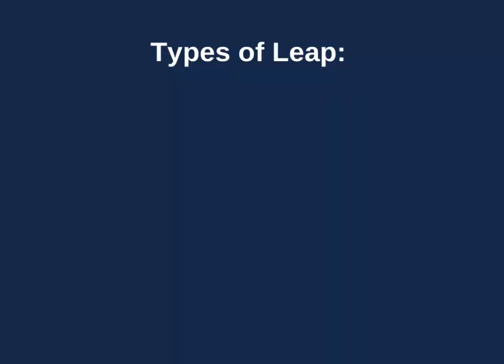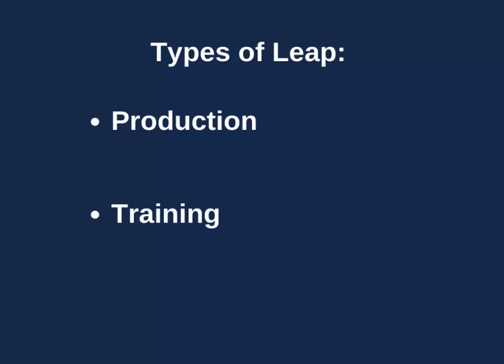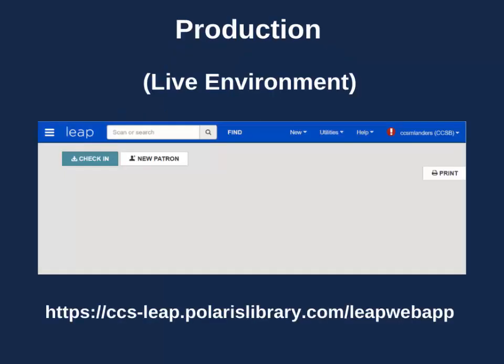Staff have access to two different types of Leap: a production database and a training database. The production database is our live environment — it's what staff use in their day-to-day at the library. The URL for Production Leap is listed below and in the accompanying PDF. The banner in Production Leap is blue.